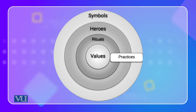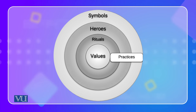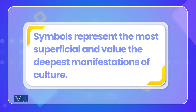As you can see, at the core are values, then rituals, then heroes, and then symbols. Symbols are the most superficial and explicit level.